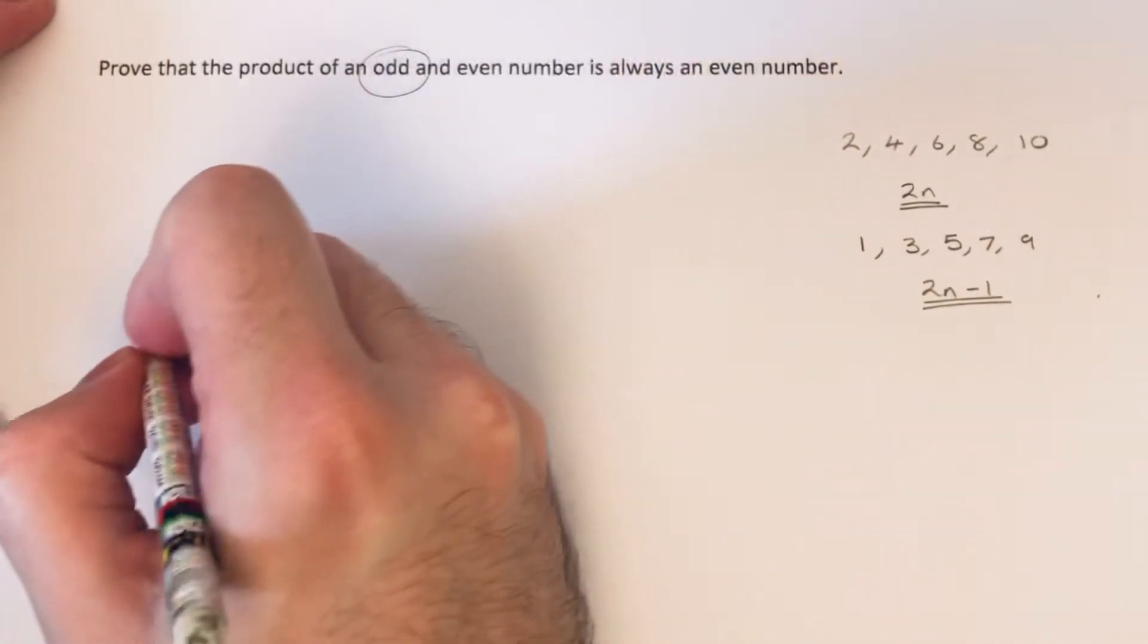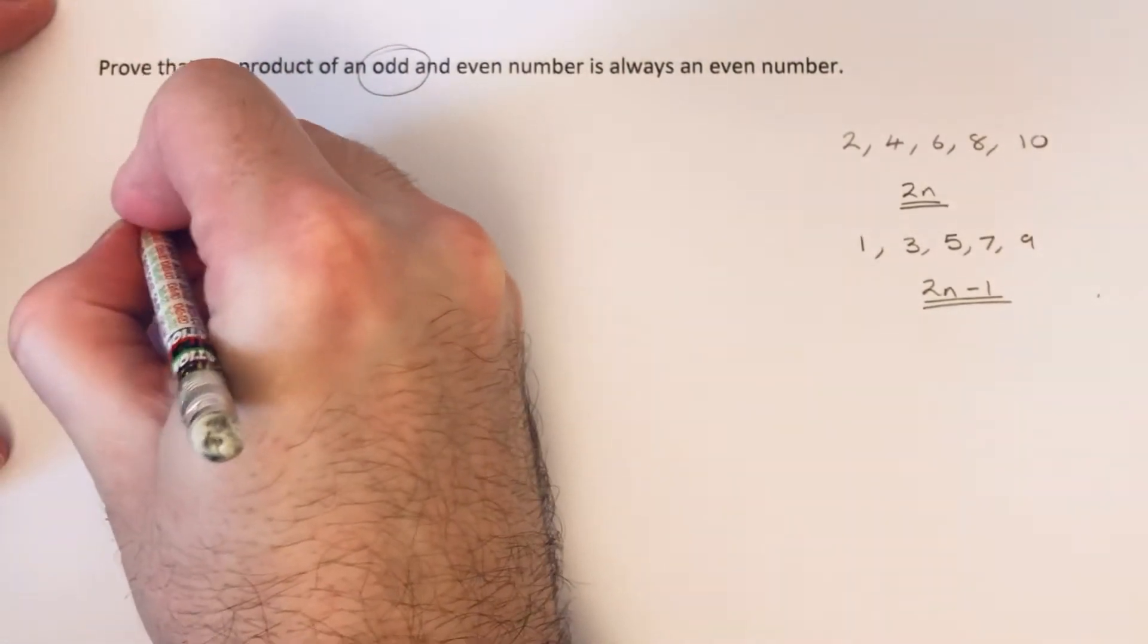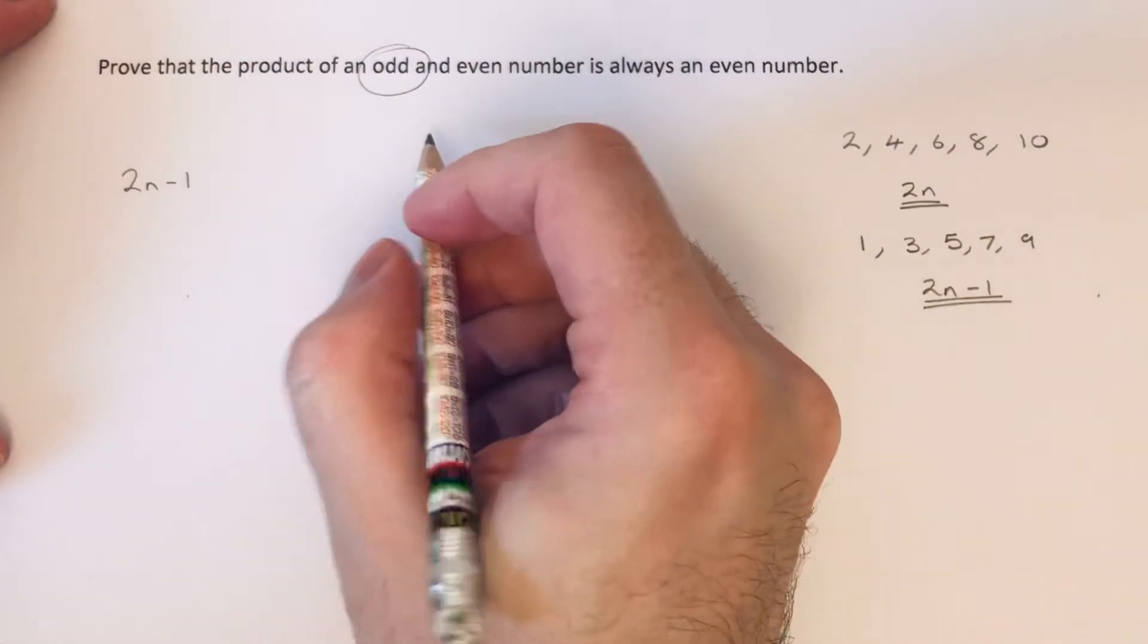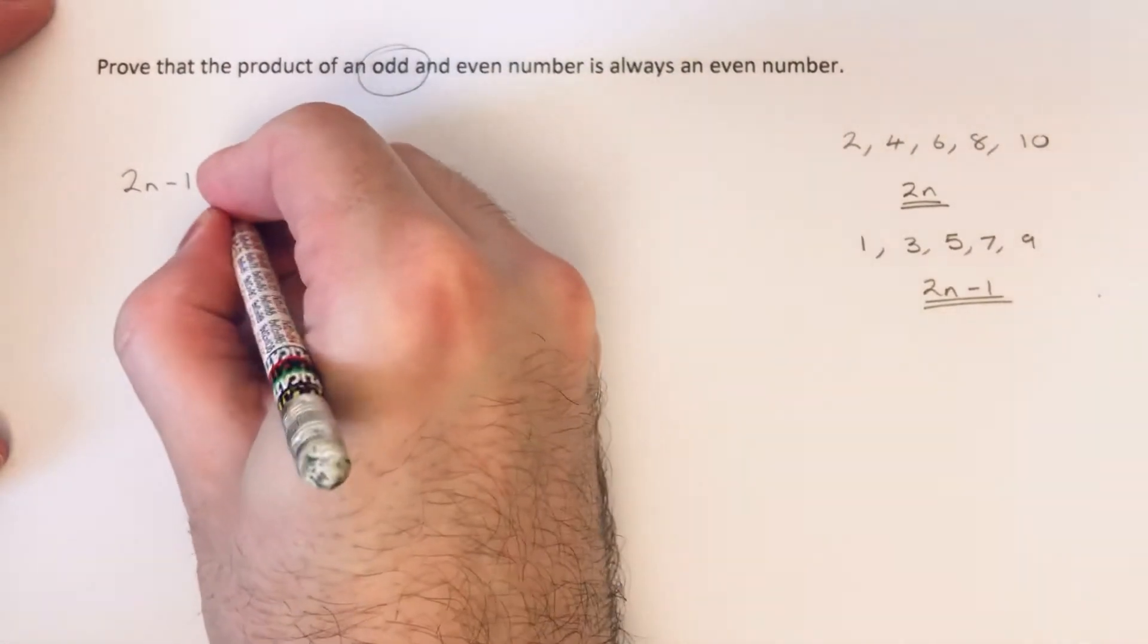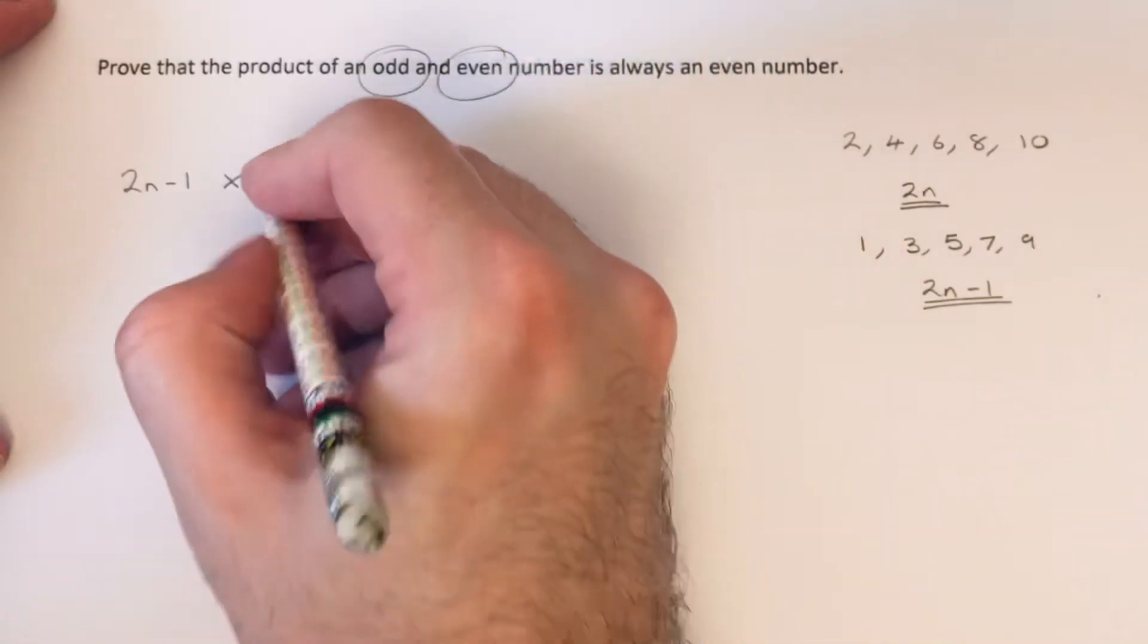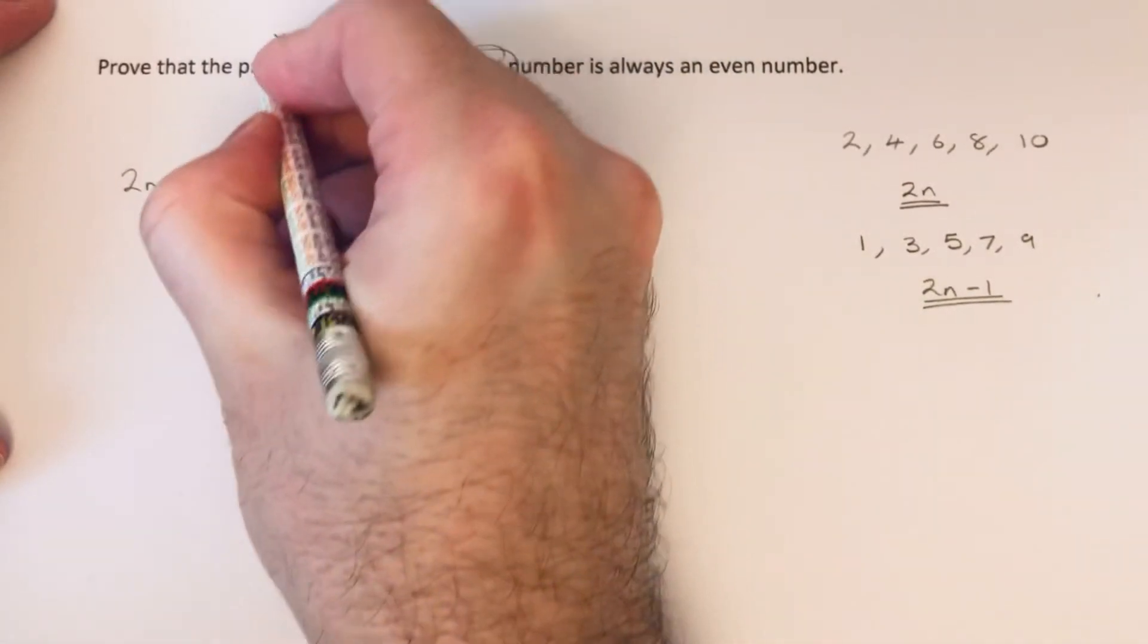For our odd number, we're going to call that 2n minus 1, and we're going to multiply that by the even number 2n, because product means times.